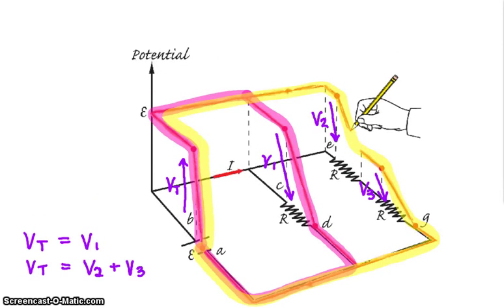Again, this is the loop rule. Whatever the total rise is, the total voltage gain is equal to the voltage drop around each individual loop, no matter how many loops there happen to be in the circuit.